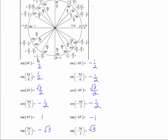Looking at the sine values: the sine of a positive angle is one half, and the sine of the corresponding negative angle is negative one half. When we replace x with the opposite of x, we get the opposite y-value. So the sine of negative x equals the opposite of the sine of x, which by definition means that sine is an odd function.